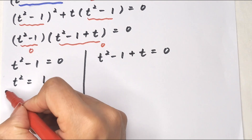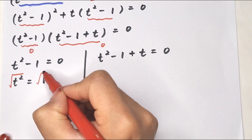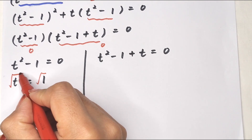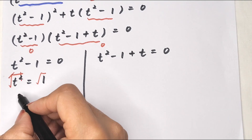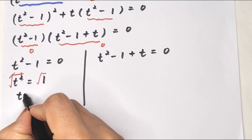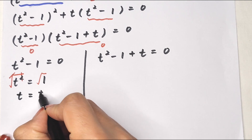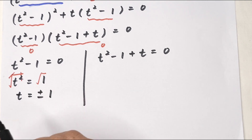From the first case, t squared minus 1 equals 0, this gives t squared equals 1, so t equals plus or minus 1.